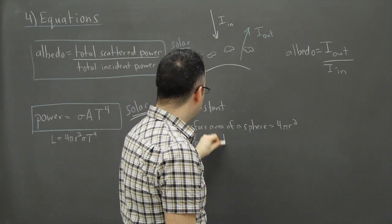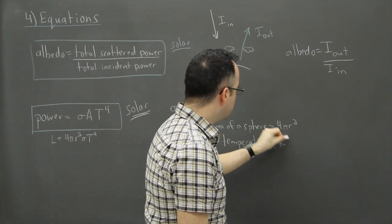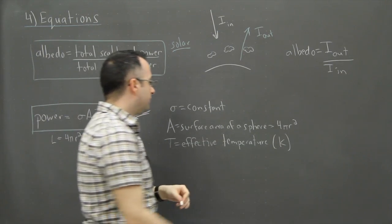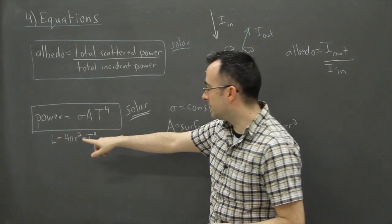Then we have T, and T is really important. It's what we call the effective temperature. Some people call this the Planck temperature, but this is the effective temperature. And normally that's measured in degrees Kelvin. Sometimes it's in Celsius, but there it is.